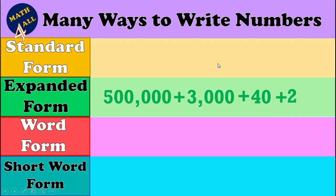To get the standard form, we search for the biggest number. The biggest number here is five hundred thousand — it's a six-digit number. So the standard form will also be a six-digit number. I write five in the hundred-thousands place. Next, we need the ten-thousands place — no number with five digits appears here, so I drop zero. Then the thousands place: three thousand is four digits, so I drop three.